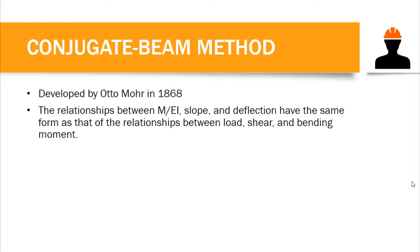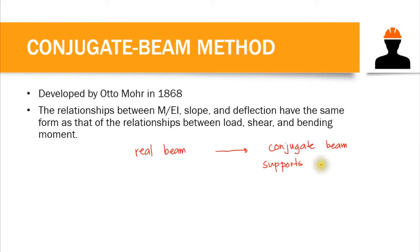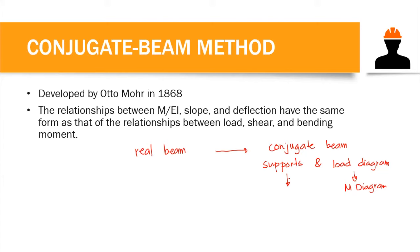To apply the conjugate beam method in finding slope and deflection, we convert our real beam into a conjugate beam. To do this, we need to change both the supports and the load. In the conjugate beam, we replace our load diagram with the moment diagram as the new load. For the supports, we change them according to the slope and deflection availability.